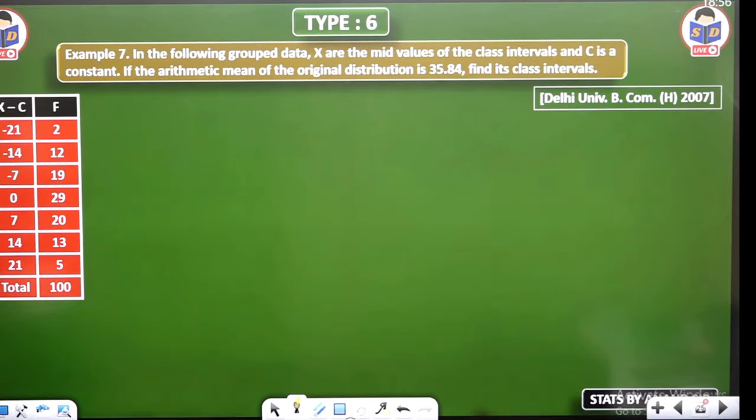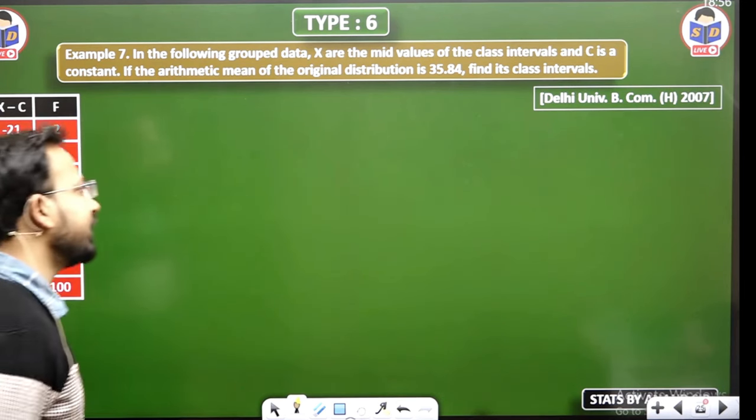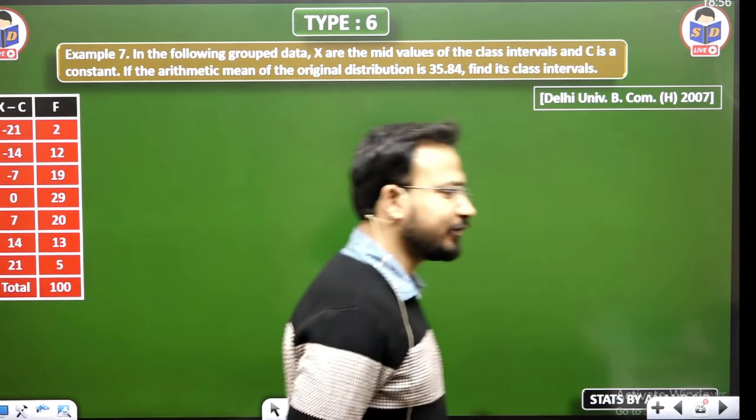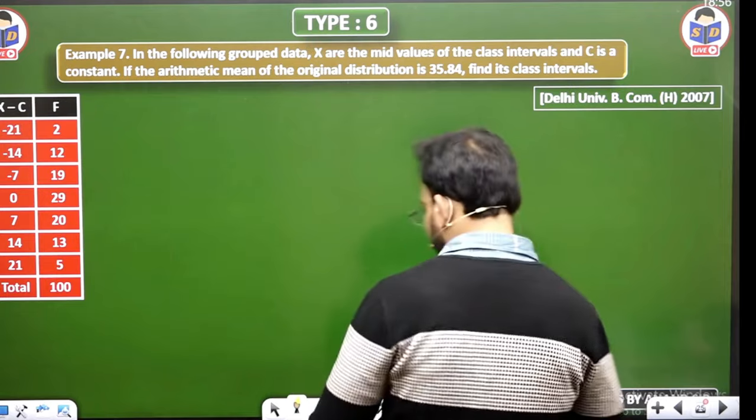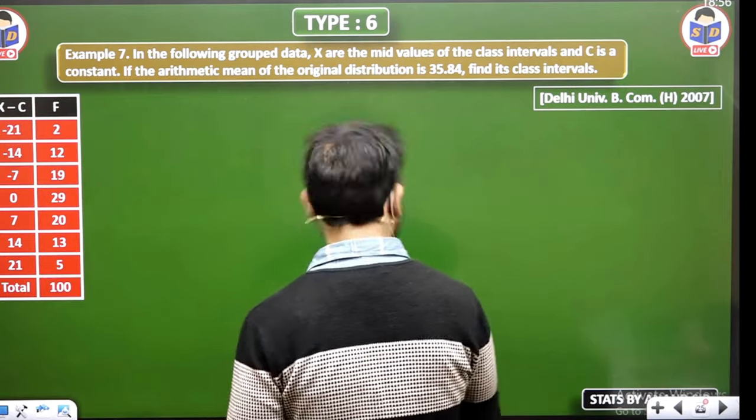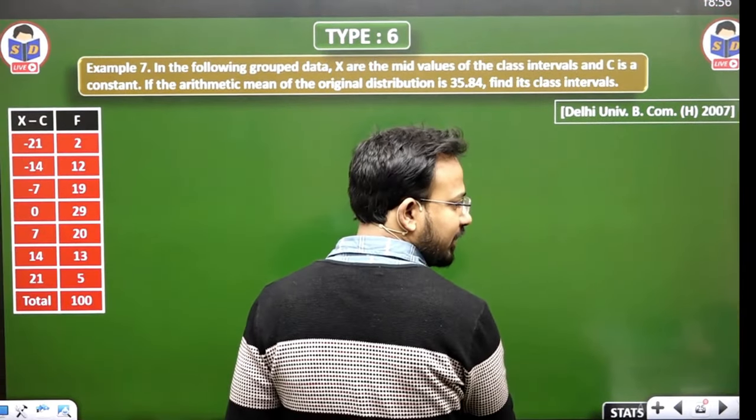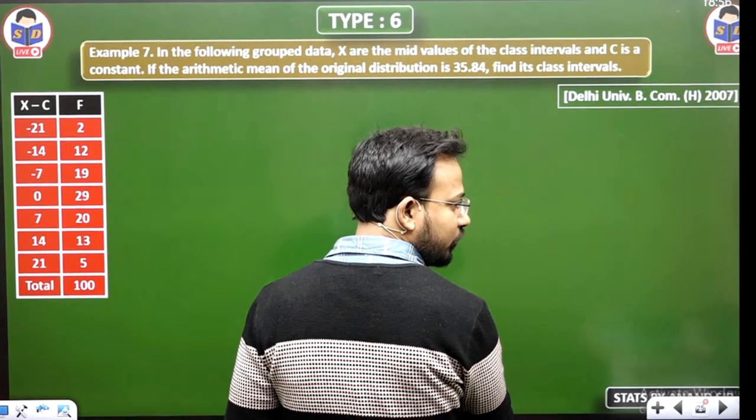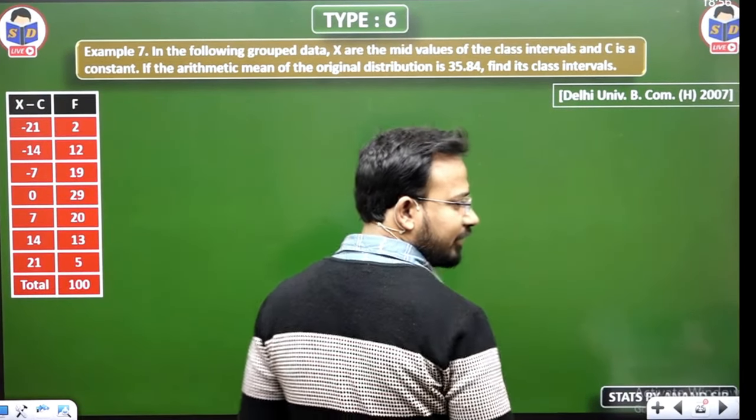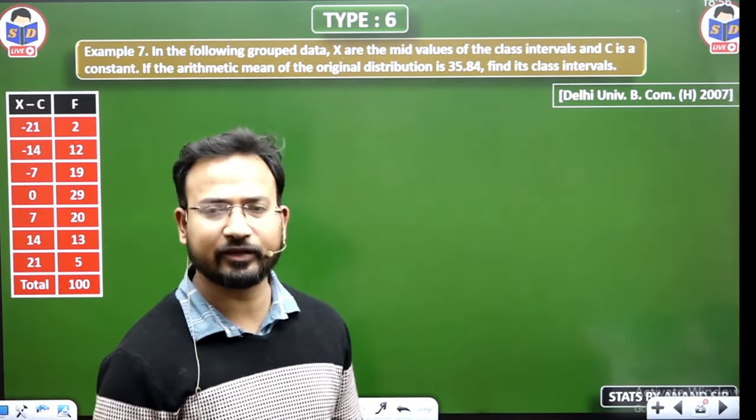Yes, now you have a question. Type 6, this is the question of Delhi University BCOM Honours 2007. So the question is a little old, we will take a new question, but the new question will be in the latest three years pattern in the last three years.